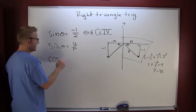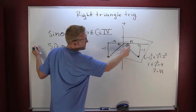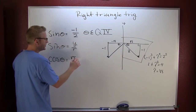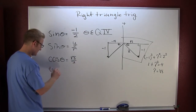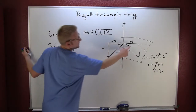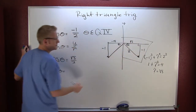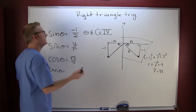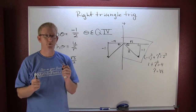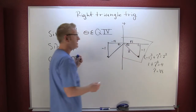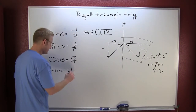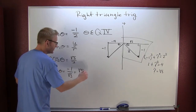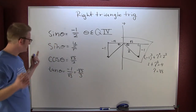If I'm trying to find the cosine of theta, the cosine is adjacent over hypotenuse, so my cosine is going to be root 3 over 2. My tangent of theta is opposite over adjacent. My tangent is opposite over adjacent, so that's going to give me minus 1 over the square root of 3. Most people rationalize that, and they call it minus root 3 over 3.